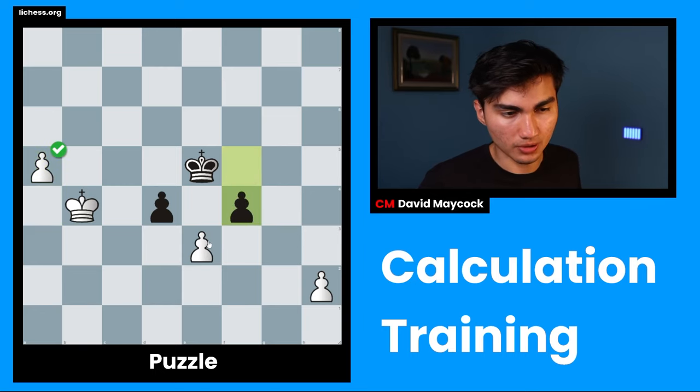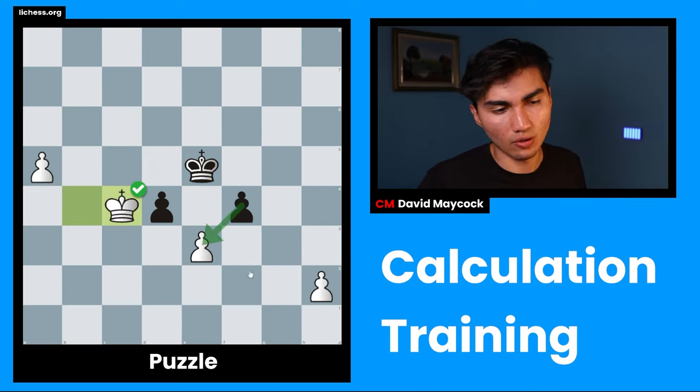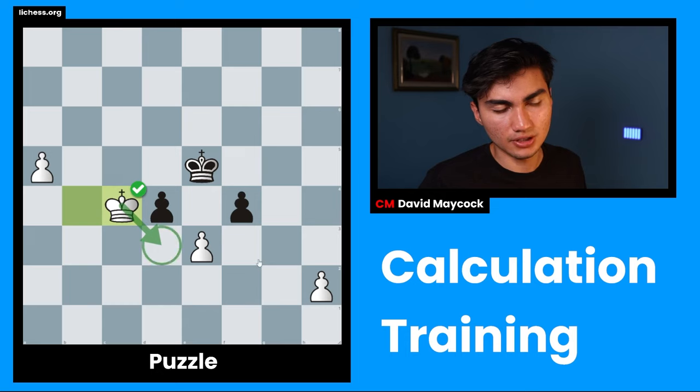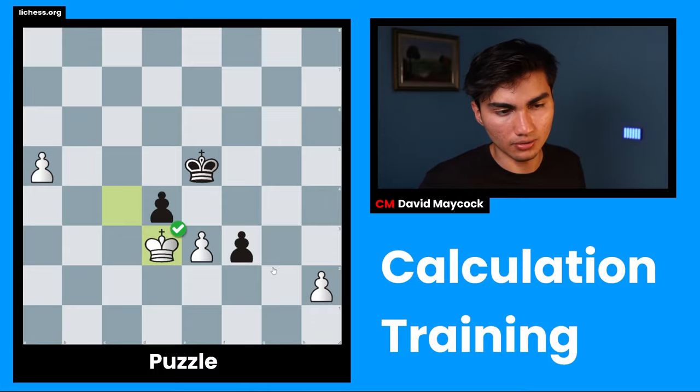King takes f4, king c4, king e3 is there. So, we had to find king c4, and understand that always, if black takes, this king is stopping these two pawns, and one of our pawns is definitely going to promote. So, after f3, we just had to find king d3, and that was the end of the puzzle.